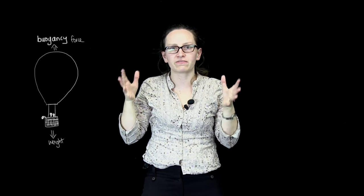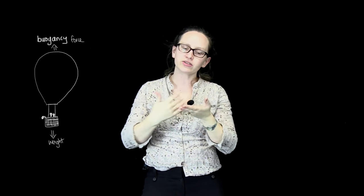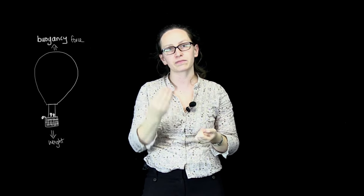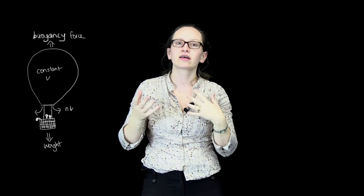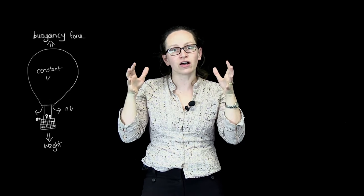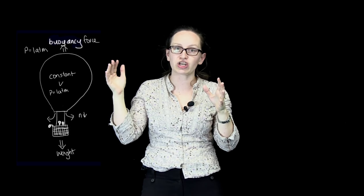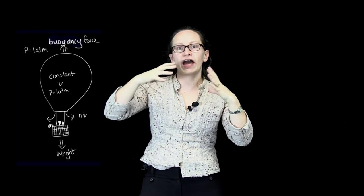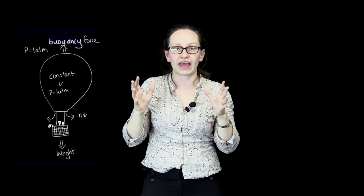We can use the ideal gas law to describe what happens in a hot air balloon. A hot air balloon is made with a fixed volume, so the volume is fixed. The bottom of the hot air balloon is open to the atmosphere, so gas molecules can flow in and out. This means that the pressure within the hot air balloon is kept at one atmosphere — the same as the pressure outside. So unless a hot air balloon goes really, really high, it's going to be at a pressure of one atmosphere.